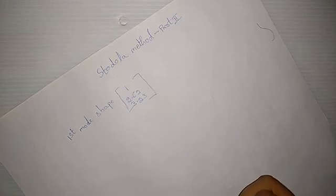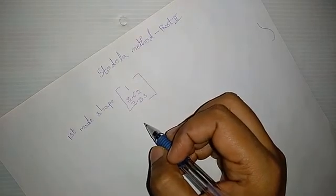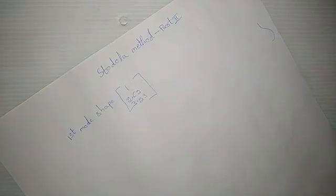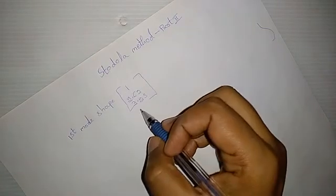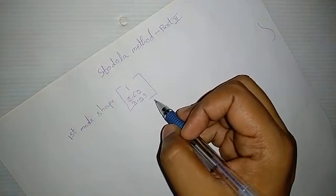This is a continuation of the Stodola method. In the previous video, we were discussing a numerical method. If we continue the iterations, we would get the first mode shape as 1, 2.62, and 3.23.